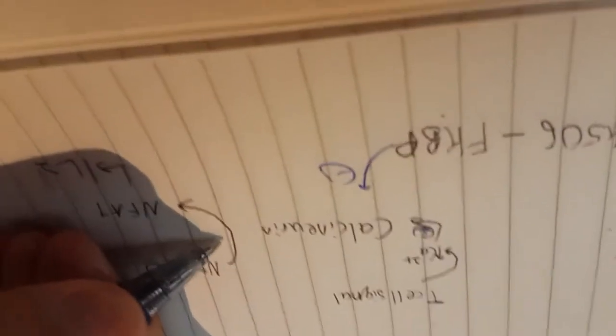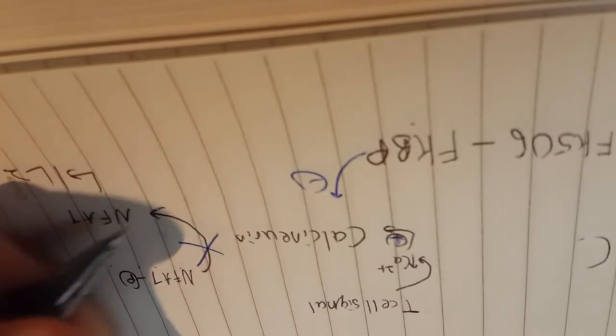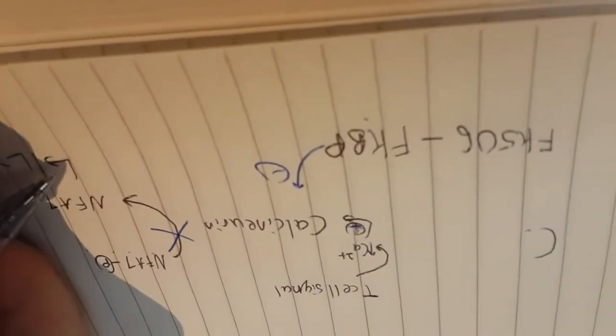So FK506 or tacrolimus will bind to FK binding protein in T-cells, leading to inhibition of calcineurin. Inhibition of calcineurin will lead to inhibition of dephosphorylation of nuclear factor of activated T-cells. Hence you won't have interleukin-2, and hence this produces an immunosuppressive effect.